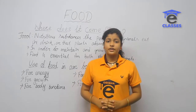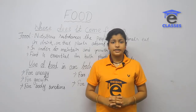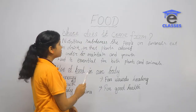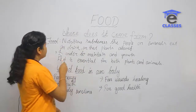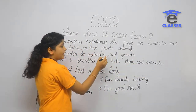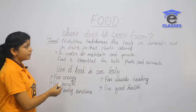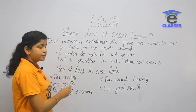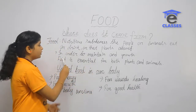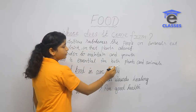Namaste everyone, welcome to Odyssey Classes. I am Rosaline. Today I am going to discuss Standard Six Science, Chapter One: Food - Where Does It Come From? Food and nutrients are substances that people or animals eat or drink, or that plants absorb. Food is essential for both plants and animals.